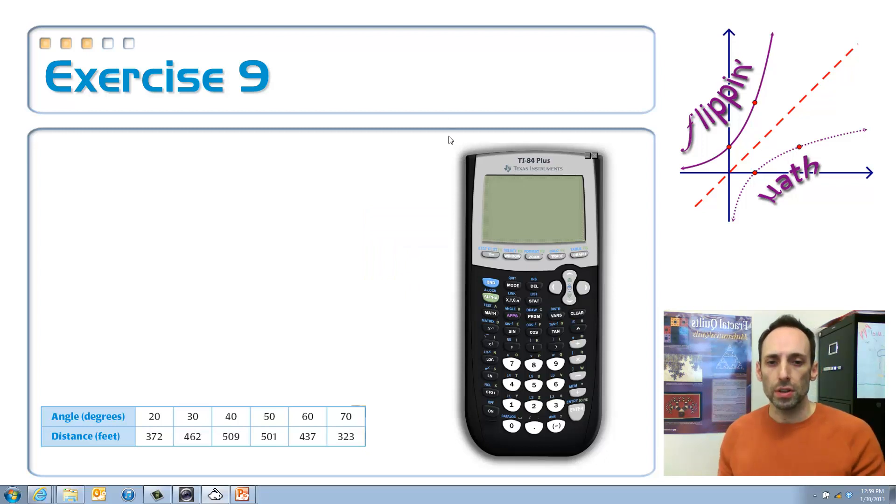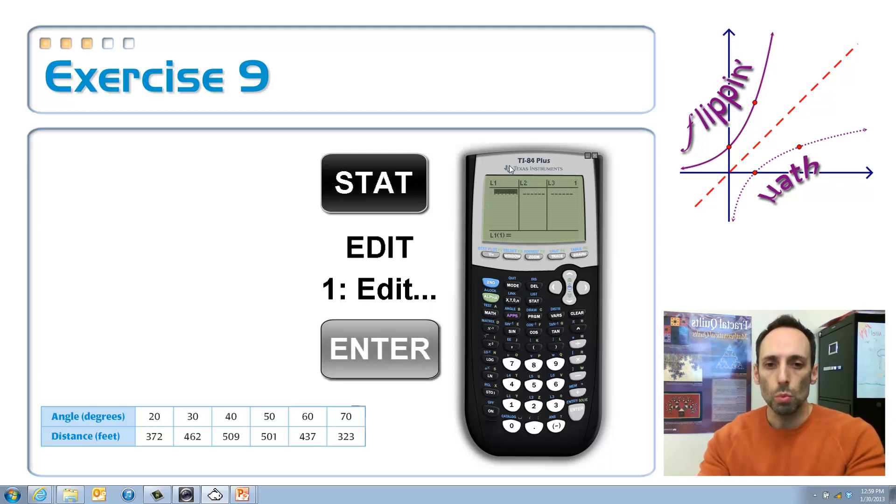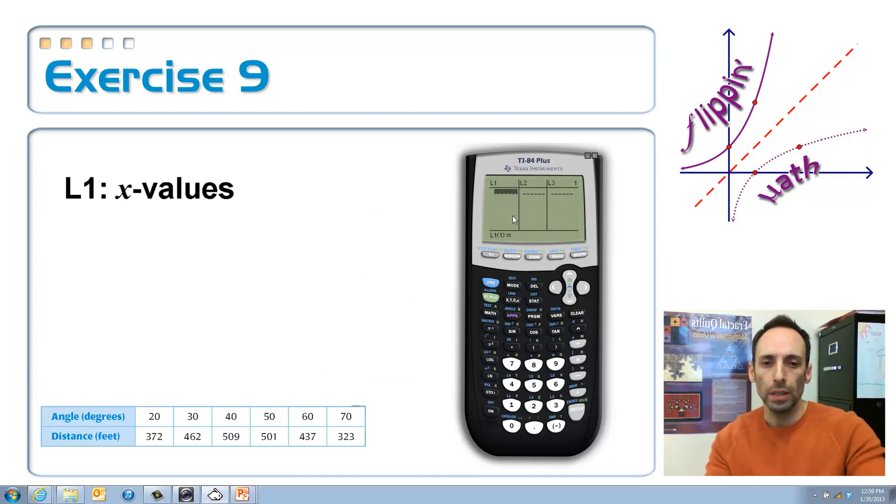So, step one whenever we do this is to put all of our data into the calculator. Turn this on, clear this out, and I do that by going to this stat menu. So, click the stat key, and the first one I want just says edit. So, in list one, we're going to put all of our x values, which for us are the angle measurements. So, just type them in, hit enter along the way. After I get them in, then I'm going to scroll over to L2. Under L2, I'm going to put the y's in, and all of the y's are the distances.